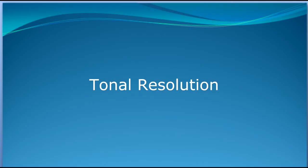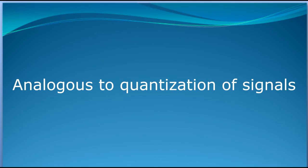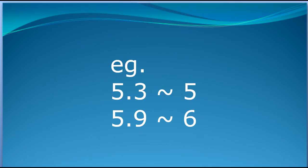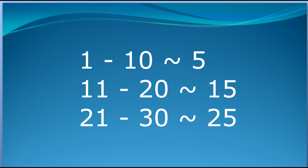Now let us move to the tonal resolution. Tonal resolution is analogous to the quantization of signals. Quantization is basically rounding off the value of an analog signal to a particular discretized level. For example, 5.3 will be rounded off to 5 and 5.9 will be rounded off to 6. Similarly, a range of 1 to 10 can be rounded to 5, and 11 to 20 to 15. So this rounding of a continuous range into discretized levels is known as quantization.